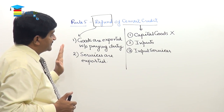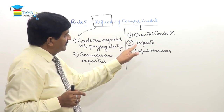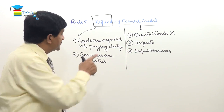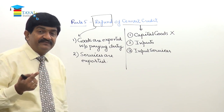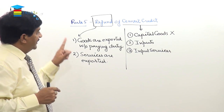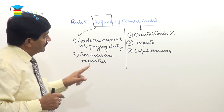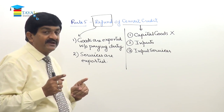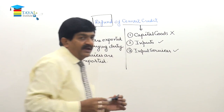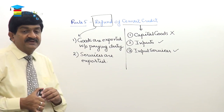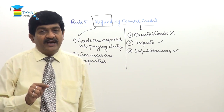Rule five says: if the goods are exported or services are exported, then the CENVAT credit availed by the exporter in relation to inputs and input services used in those goods or in providing those services is refundable in cash. As far as CENVAT credit on capital goods is concerned, that is not refundable. But how much amount will be refunded? For that, a formula has been prescribed in rule number five.